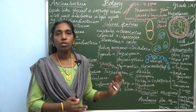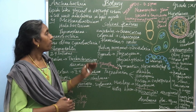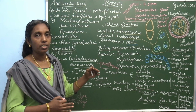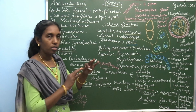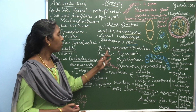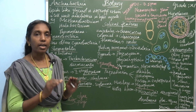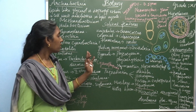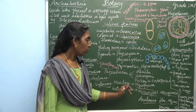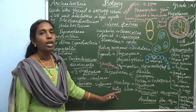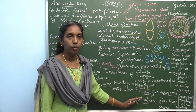The salient features of cyanobacteria are very important. Key topics include thallus organization, gliding movement, the pigments present, and the reserve food material which is cyanophycean starch. Also note how reproduction takes place, why it is called Myxophyceae, and examples of water bloom.